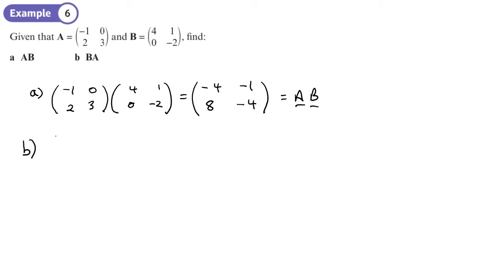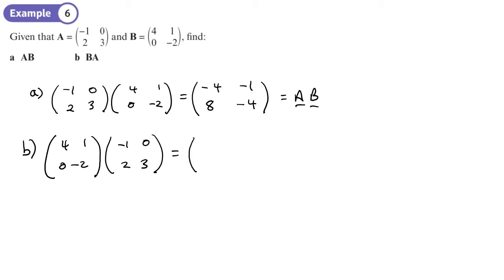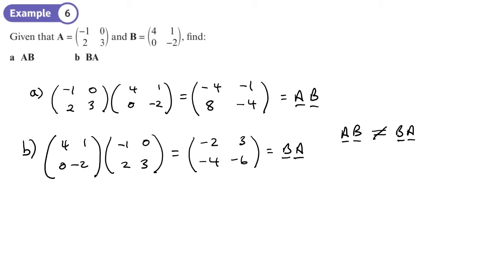Now let's look at B times A — swapping the order: 4, 1, 0, negative 2 times negative 1, 0, 2, 3. First element: 4 times negative 1 plus 1 times 2 = negative 4 plus 2 = negative 2. Already I can see it's not the same. Second element: 4 times 0 plus 1 times 3 = 3. Bottom row: 0 times negative 1 plus negative 2 times 2 = negative 4; then 0 times 0 plus negative 2 times 3 = negative 6. You can see it's completely different — the numbers aren't even swapped around.